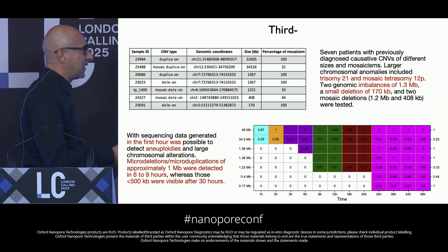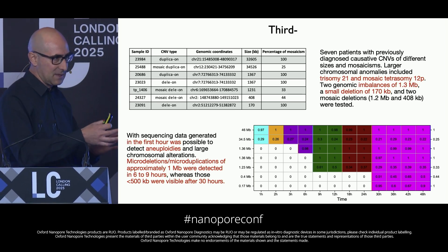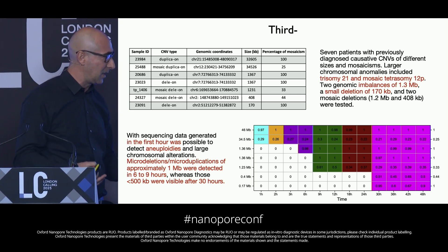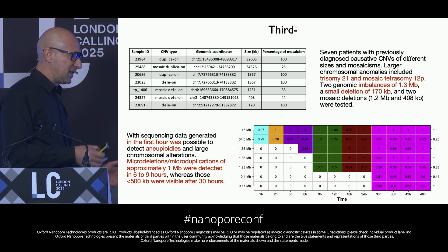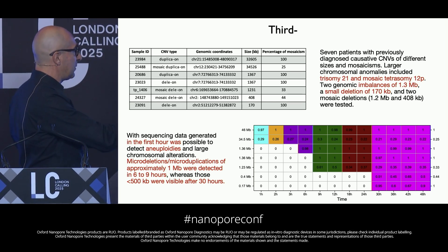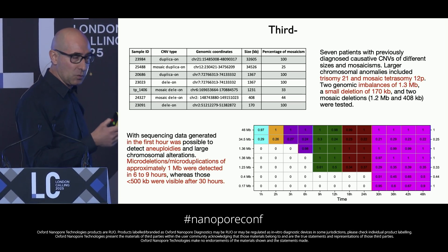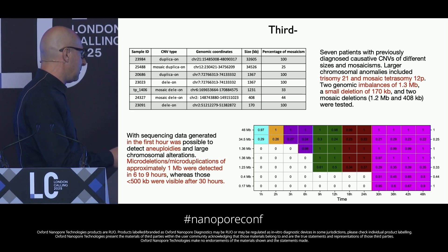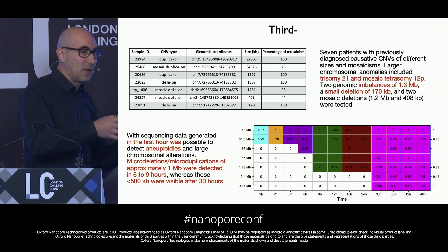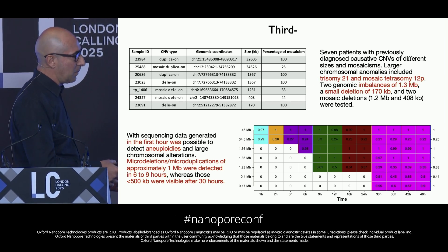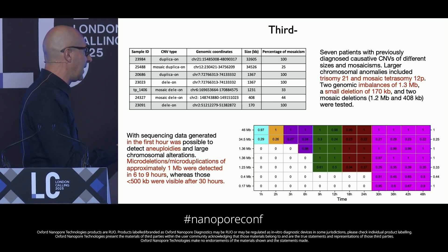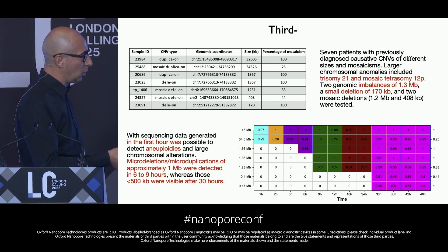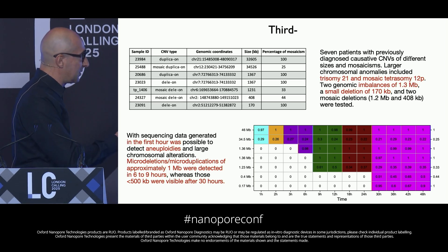We applied this to a small dataset of seven patients with pathogenic CNVs of different sizes — from large aneuploidies to micro-duplications and micro-deletions, down to CNVs of hundreds of kilobase pairs. With data from the first hour, we could identify large aneuploidies; after 6–9 hours, micro-duplications and micro-deletions; and after 24 hours, smaller CNVs of hundreds of kilobase pairs. We were also able to predict the level of mosaicism.